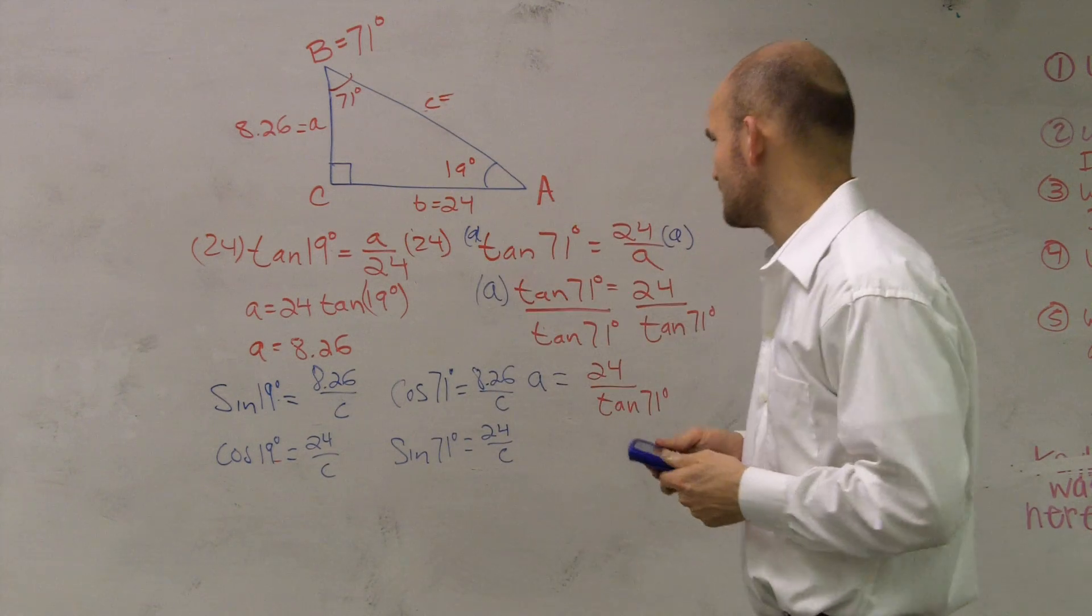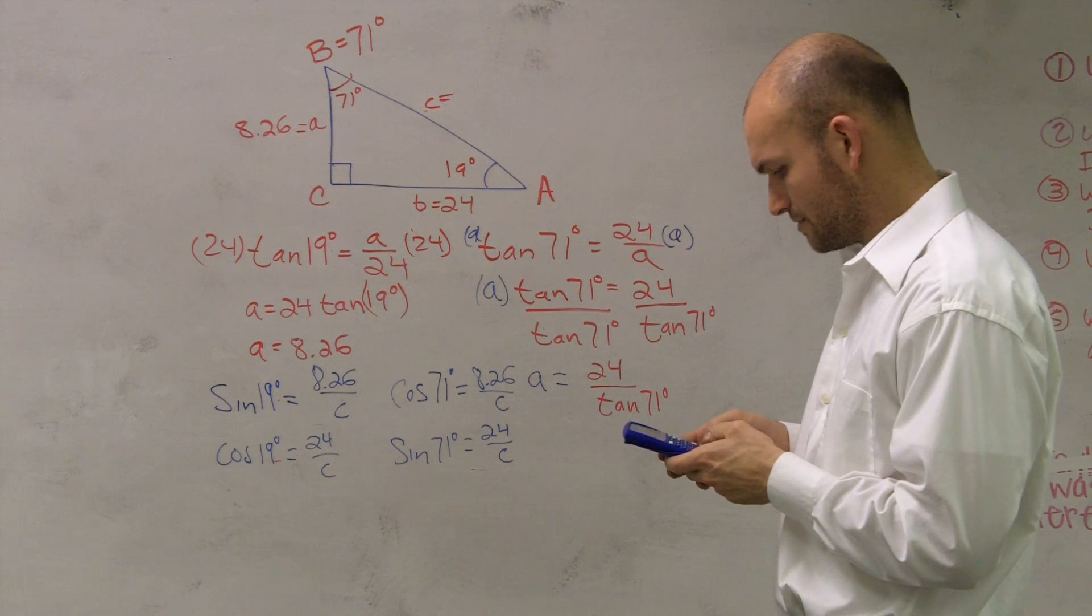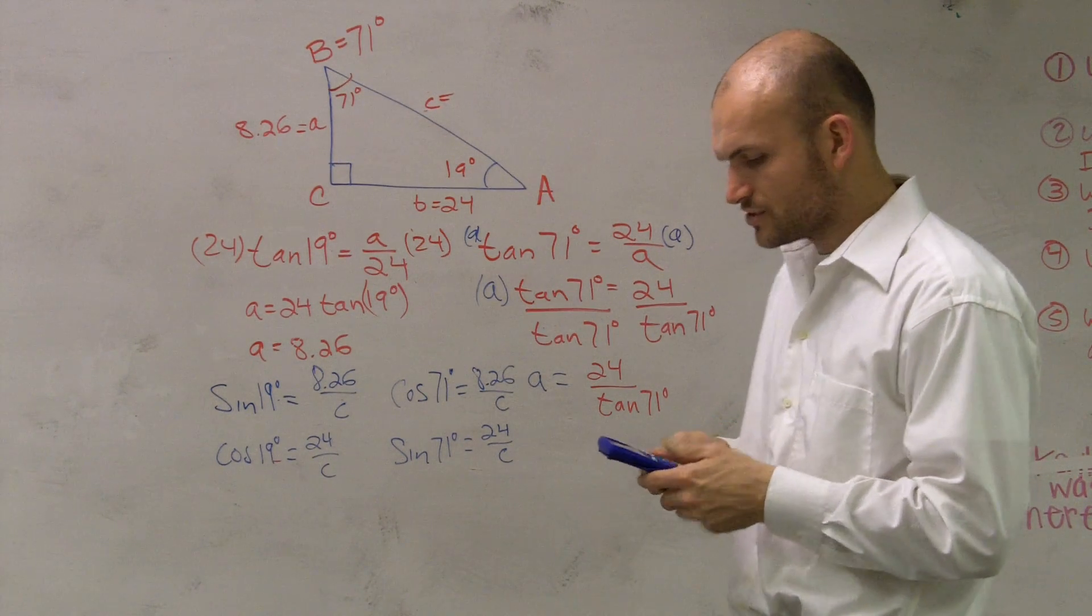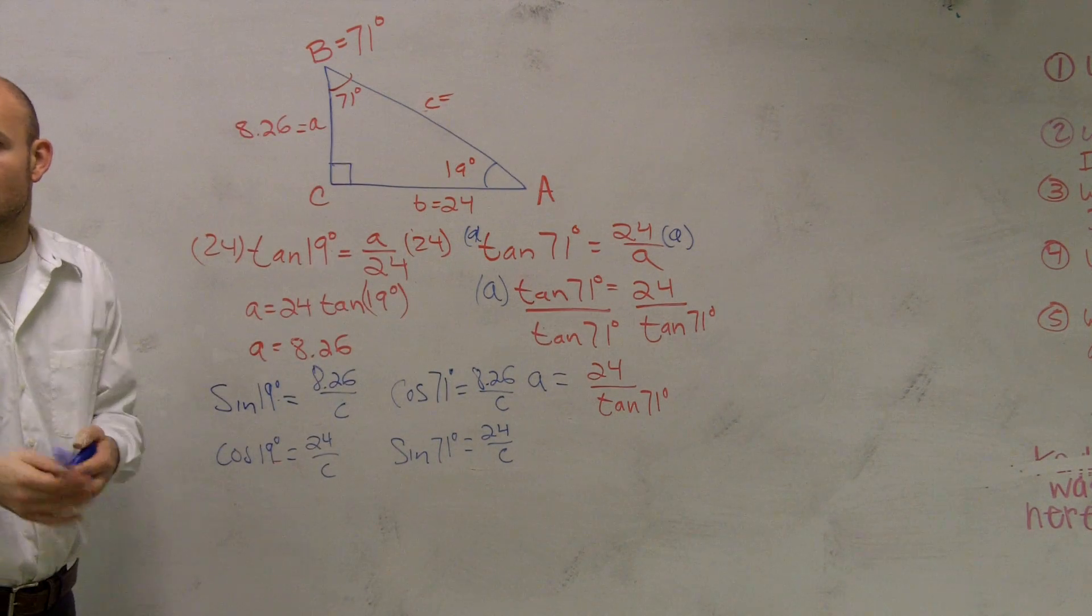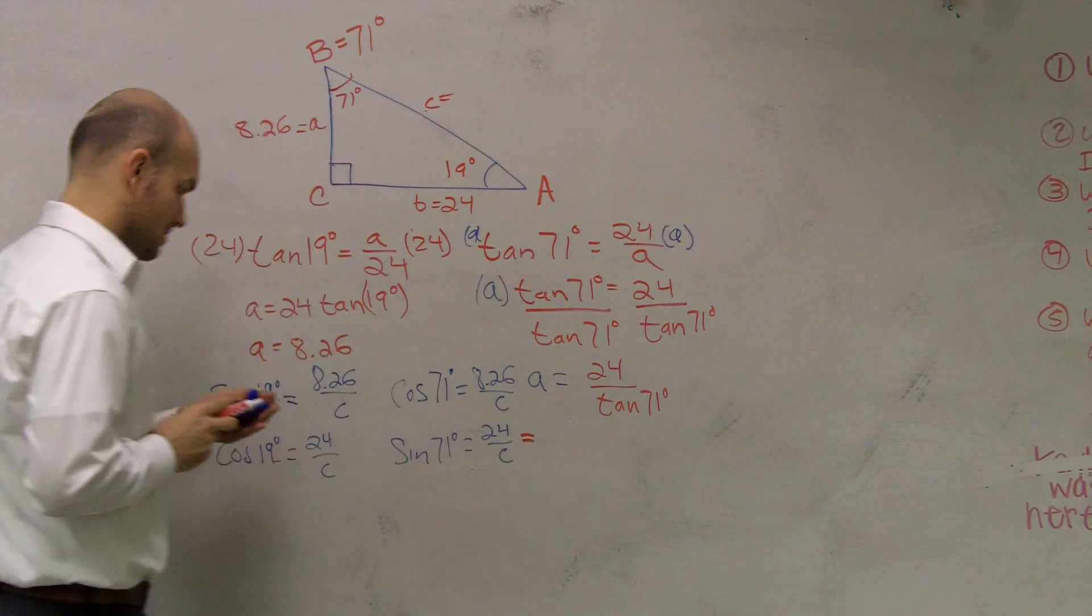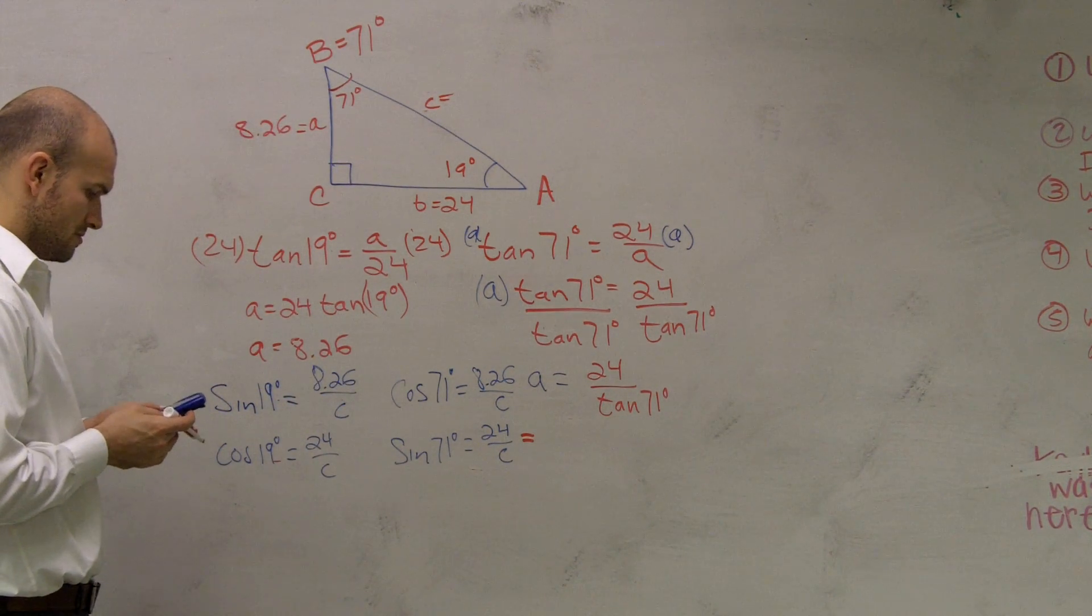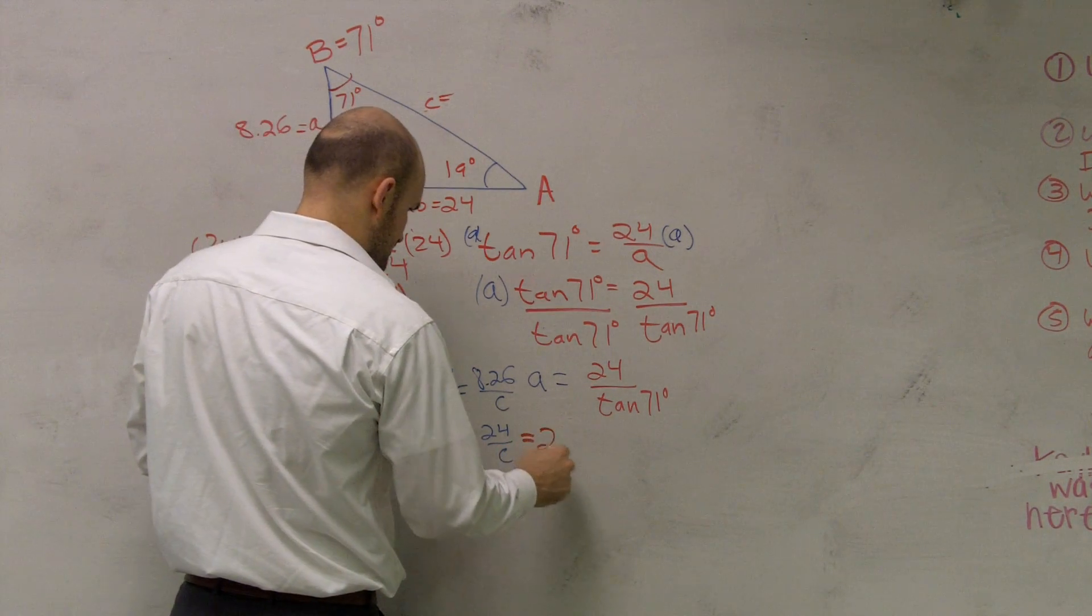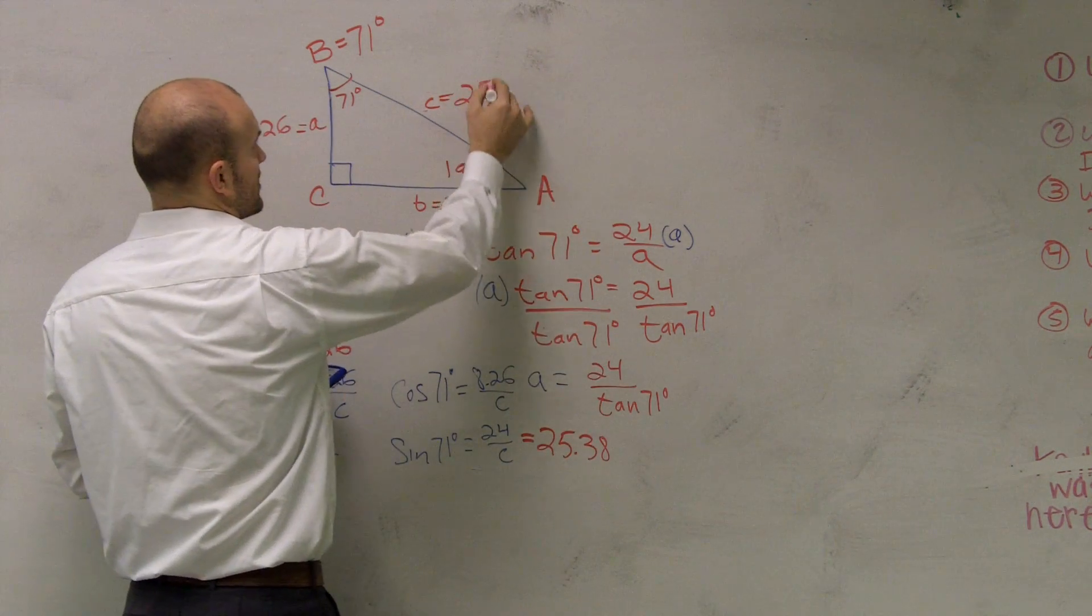Or actually, let me see which one I want to do. So I can just do 24 divided by sine of 71. I'm getting 25.38 rounded. Anybody else get that? Yeah, I got 25.38. 24 divided by sine of 71. I'll just go and check my work, but I'll just keep with it. So therefore, C equals 25.38.